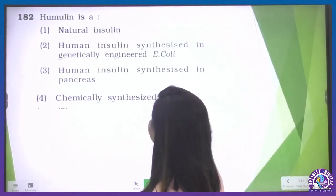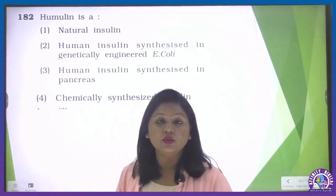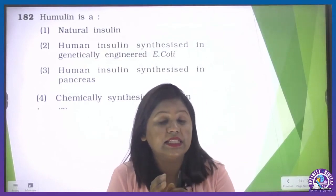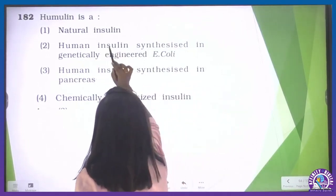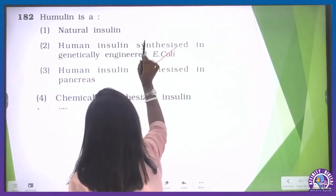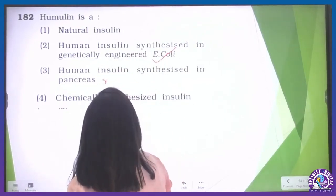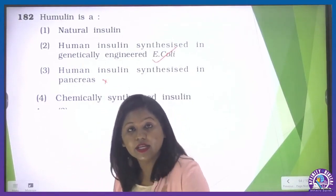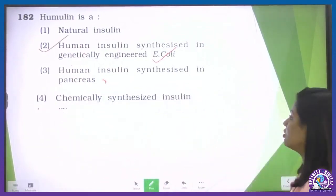Humulin — again from biotechnology. Humulin is insulin; it is a recombinant protein produced in a heterologous host, that is E. coli, by recombinant DNA technology. It is not natural insulin, not synthesized in the pancreas, and not chemically synthesized — it is genetically prepared in an organism. So the second option is our correct one.